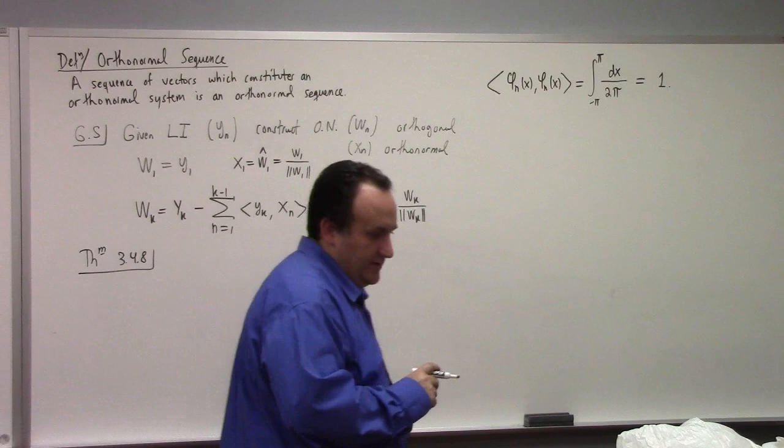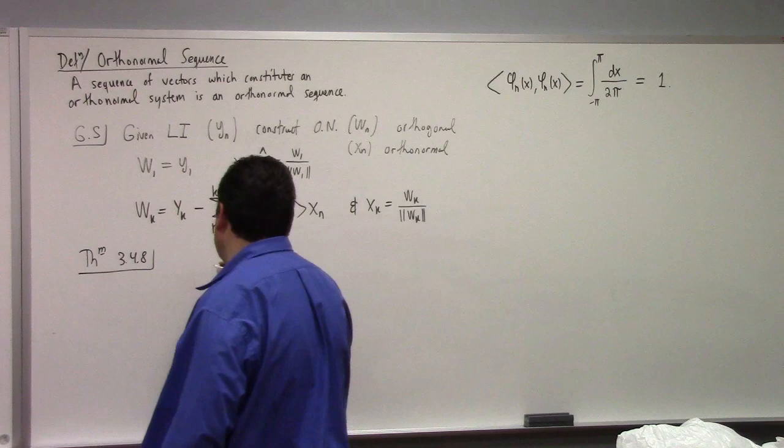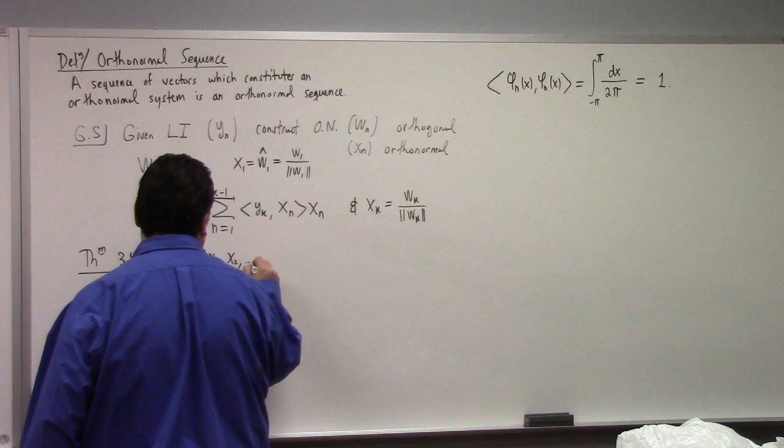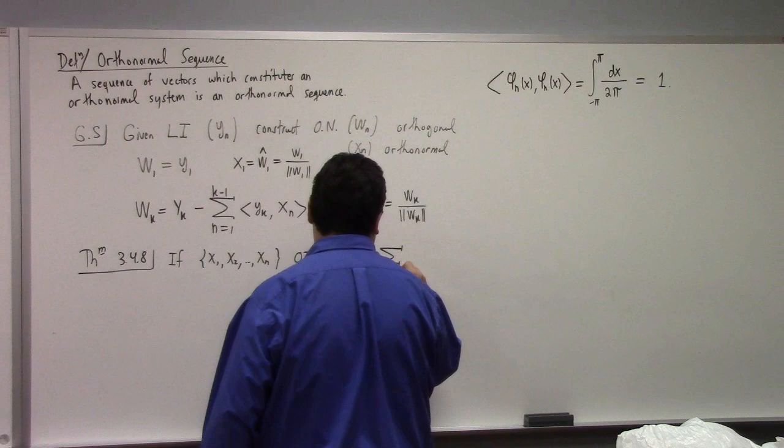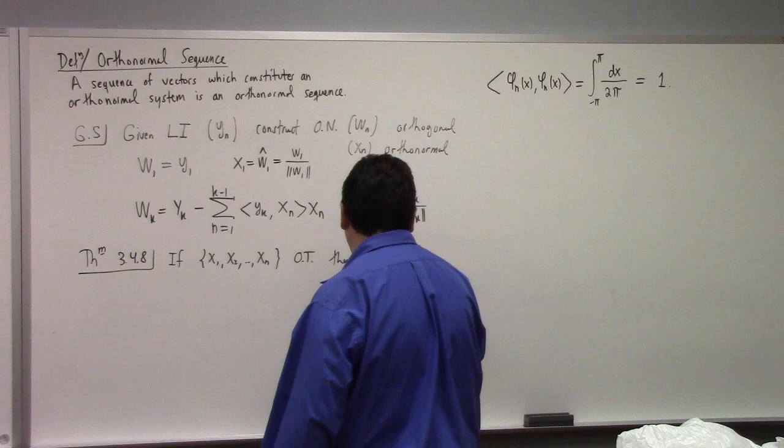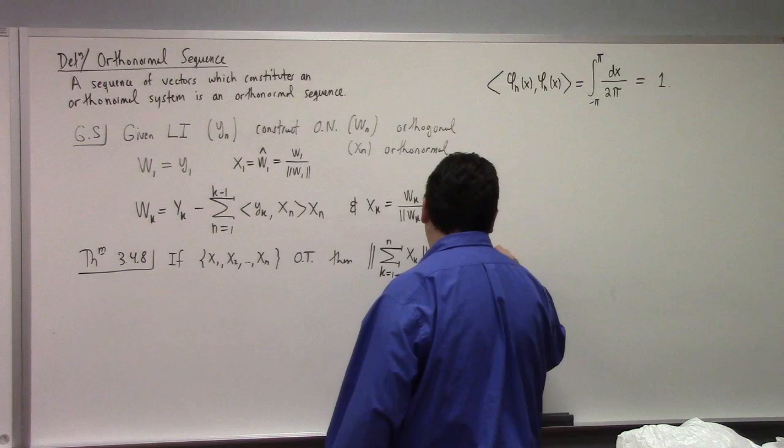It's the Pythagorean theorem, right? Pythagorean theorem formula, rather, he calls it. Which is that if we have orthogonal vectors in an inner product space, then the length of the sum, K equals 1 to N of X sub K, that length squared, is equal to the sum of their lengths squared.